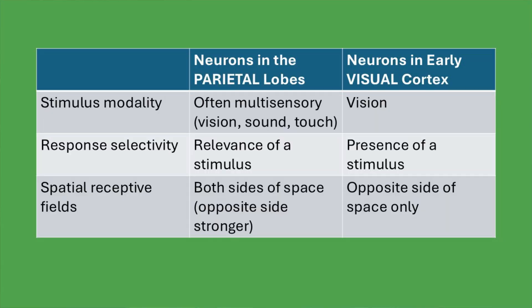We can look at the response properties of neurons in this part of the brain through single-cell recordings. What we find is that neurons within the parietal lobe respond to visual information, auditory information, and other kinds of sensory features — but in a sparse way. That is, they don't respond to every aspect of a visual or auditory scene. Instead, they respond to particular aspects of the scene that might be important.